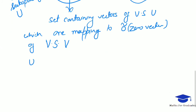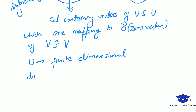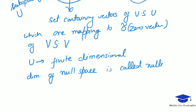And again, if U is finite dimensional, then the dimension of the null space is called the nullity, and it is denoted by eta of T.